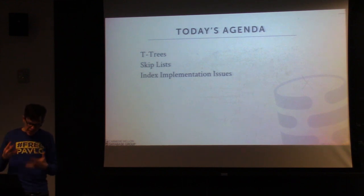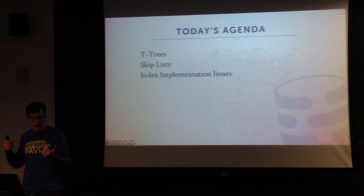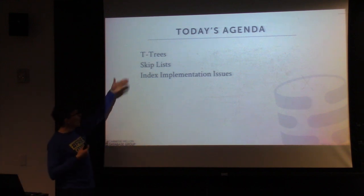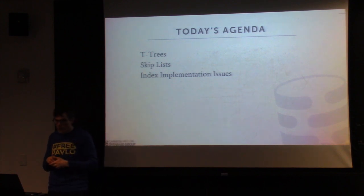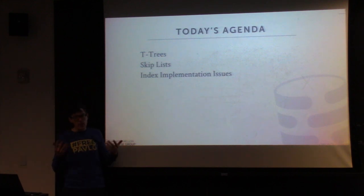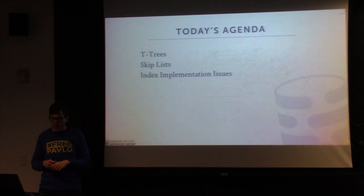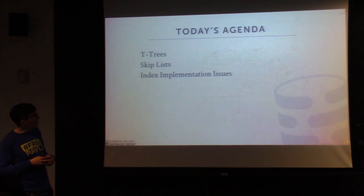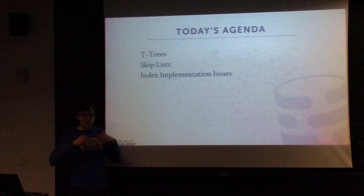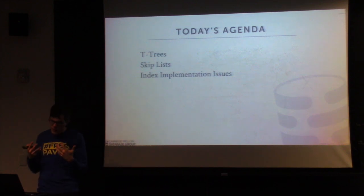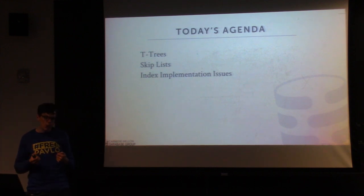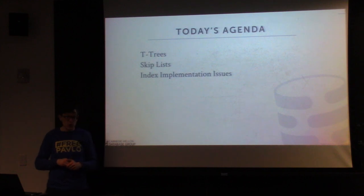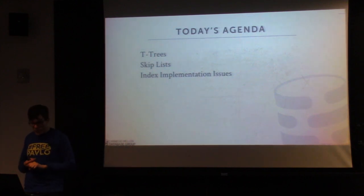For today's class, we spent the last lecture talking about locking and latching inside of indexes, and now we're going to be focusing on how do you actually build a latch-free index. I'm going to start off talking about T-trees, which are not a latch-free index, but I include them for historical reasons so you can see what the early in-memory database indexes looked like and why they're a bad idea. Then we'll spend time talking about skip lists — basic implementation and how to make them concurrent — and finish with implementation issues for building a latch-free index in a database system, applicable to any data structure.